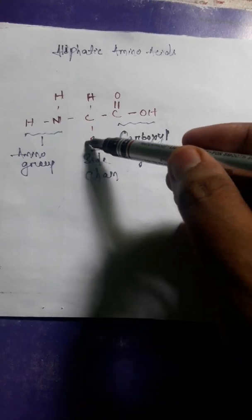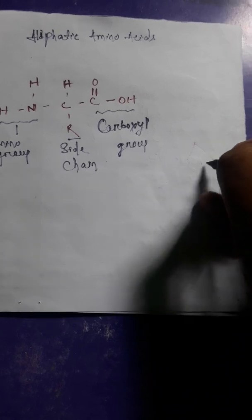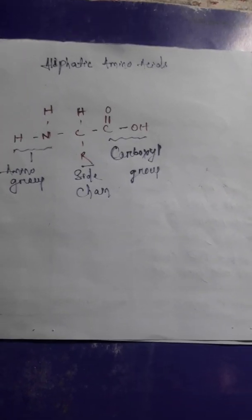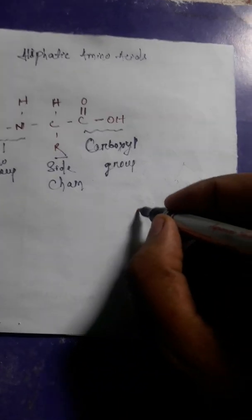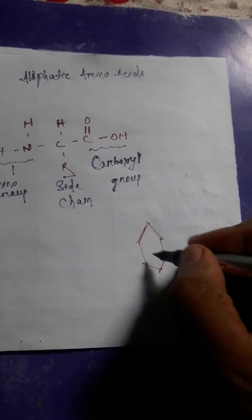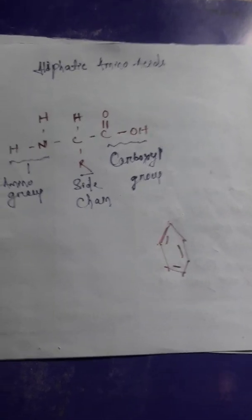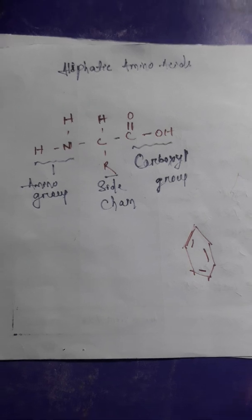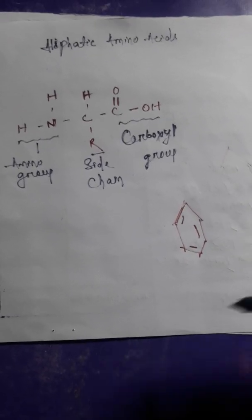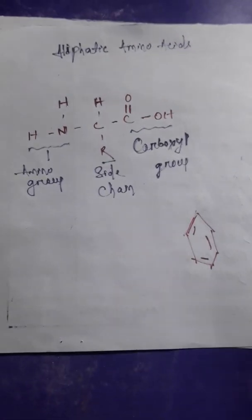In aliphatic amino acids, there is a side chain. Here you can see it is the side chain, it is not an aromatic ring. This is a benzene, an aromatic ring as we all know. If this aromatic group is attached to the side chain, then it can be called an aromatic amino acid.